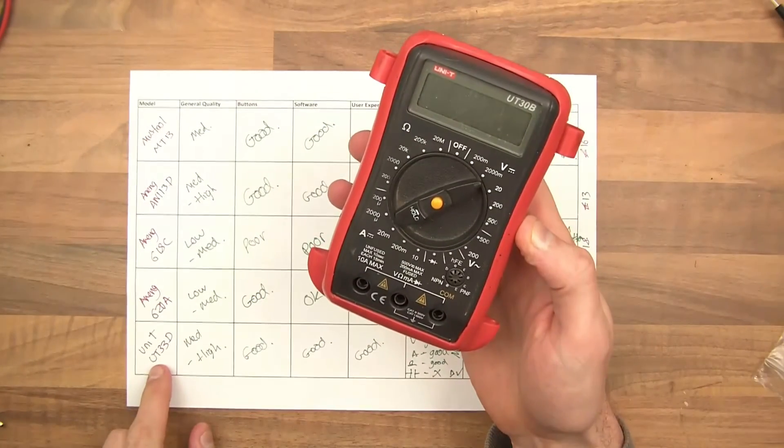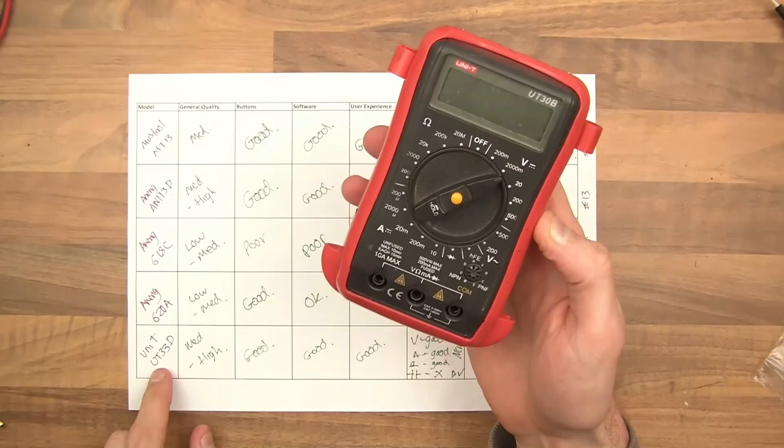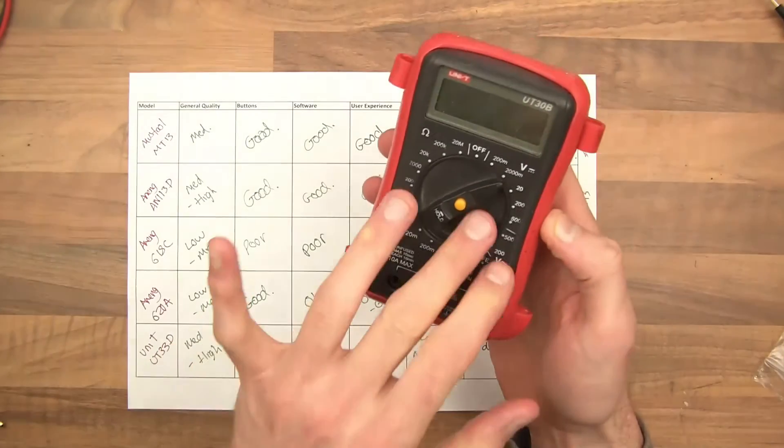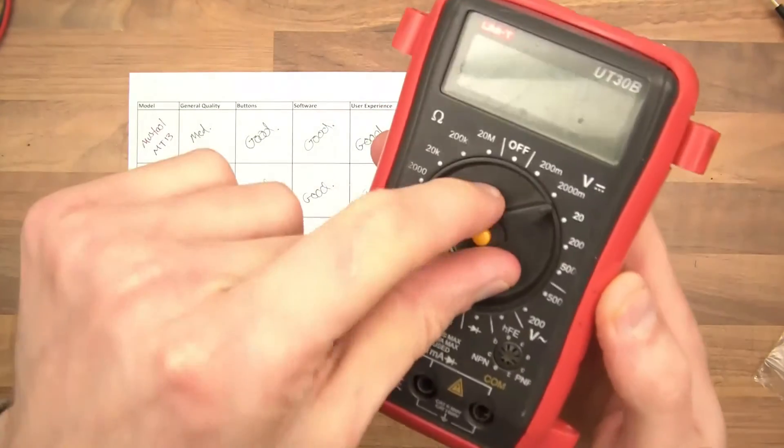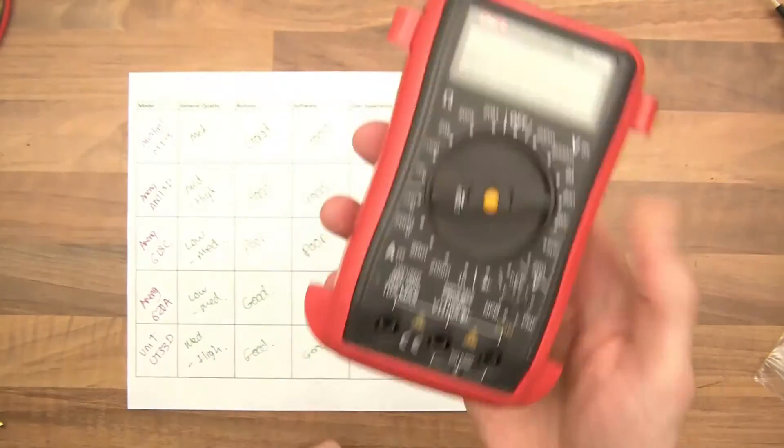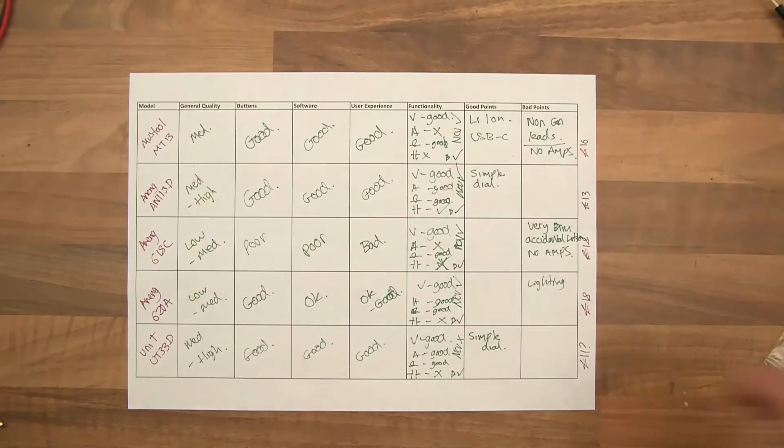This one. Of course. It was based on the UniT-UT33D. This is a very, very good quality one. Although, it's not auto-ranging. So you have to know what you're doing with this. Which if you do know what you're doing with it, it's really simple anyway. And that would be £11 as well.